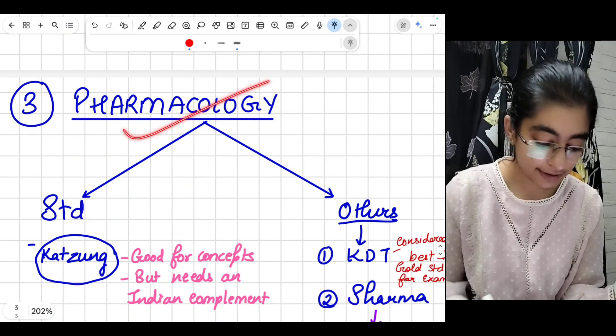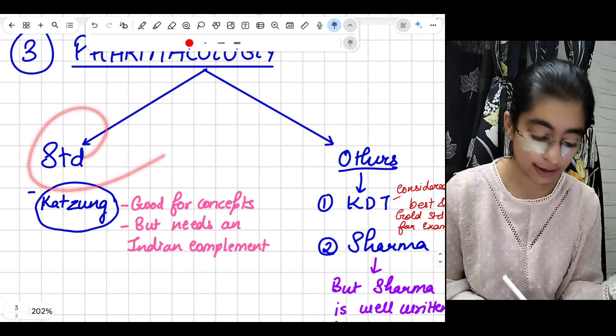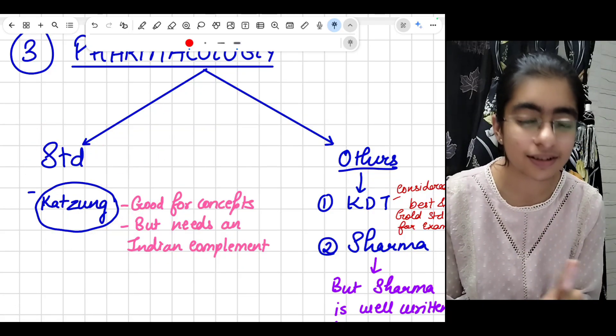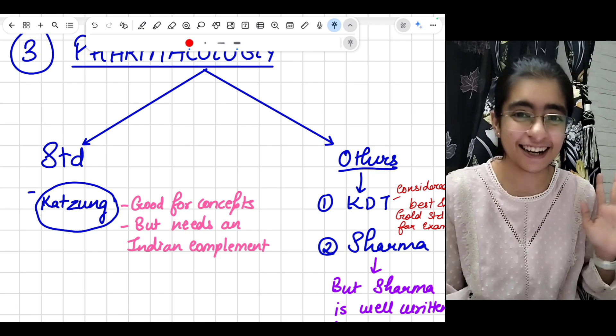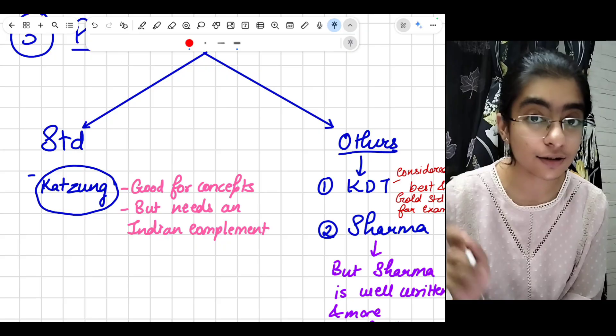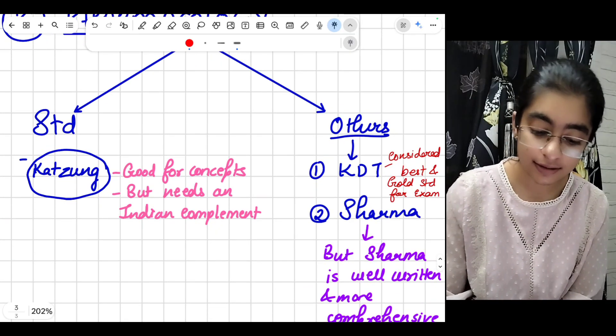Next is pharmacology. The standard textbook is Katzung and Goodman Gilman is there. It is not for us, don't even dare to pick that book. Katzung is good for concepts but needs an Indian compliment.